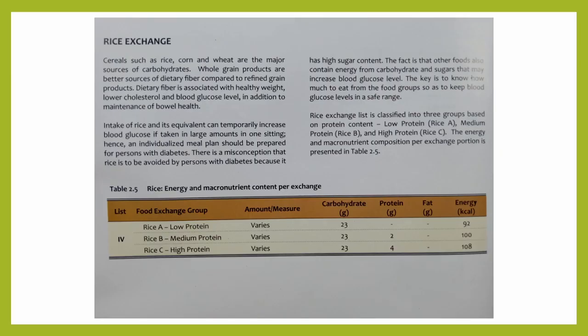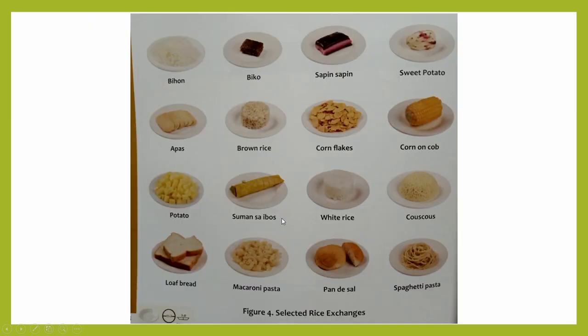For the rice exchange, they are divided into 3 groups now — rice A, rice B, and rice C. Our boiled white rice and boiled brown rice belong to the medium protein group, which is rice B. These are examples of selected rice exchanges.